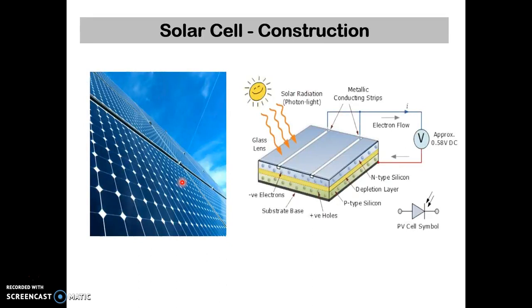A solar cell is basically a combination of P and N type semiconductors placed in layers. To protect these layers, glass lens is taken over the top.